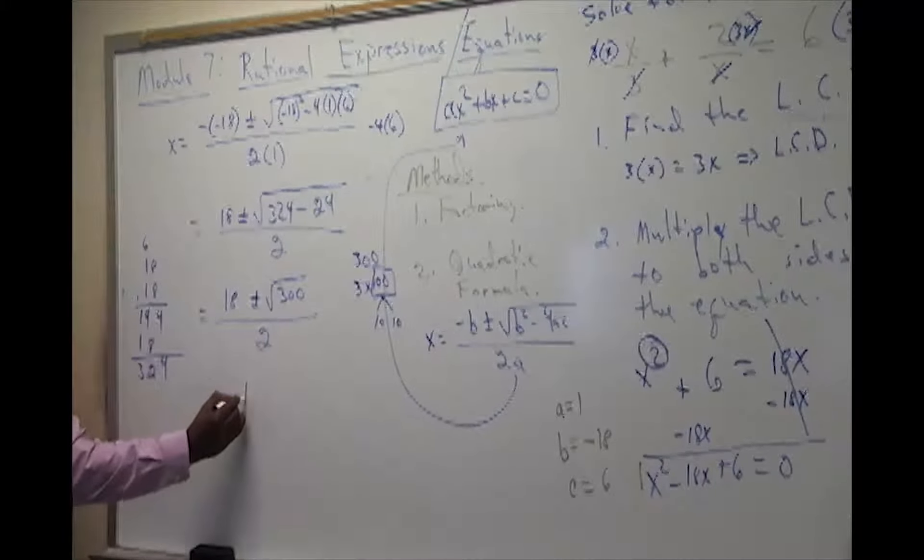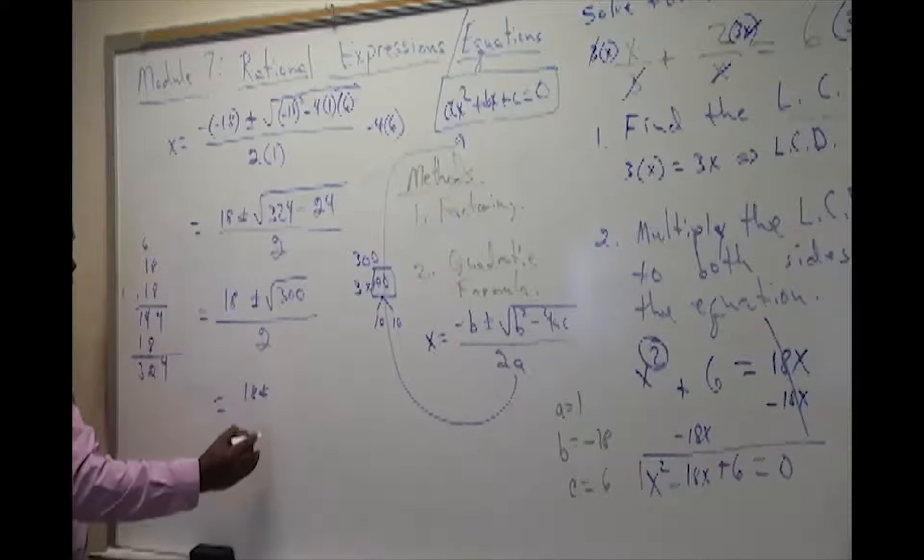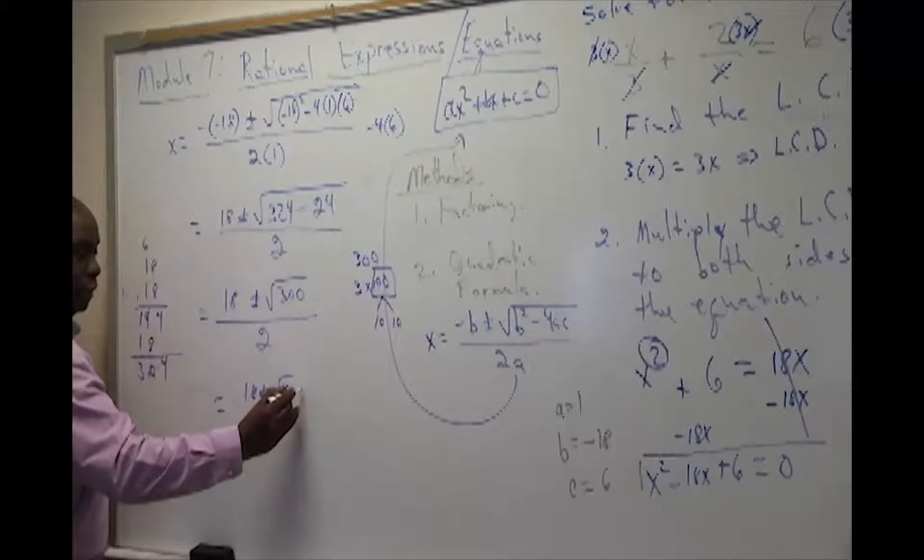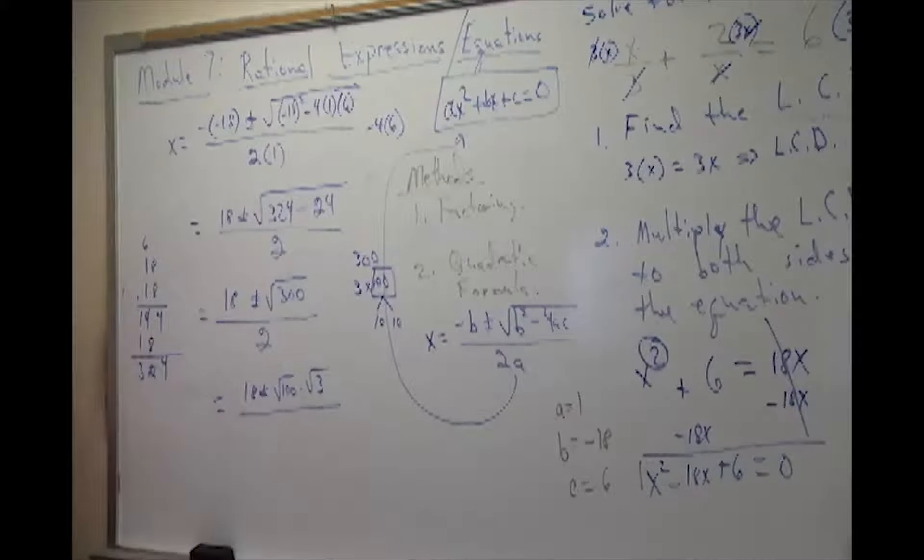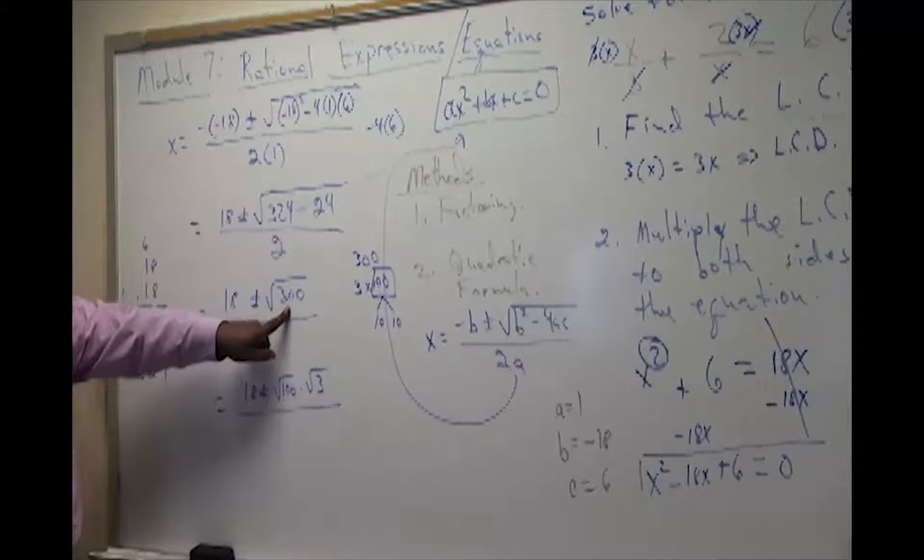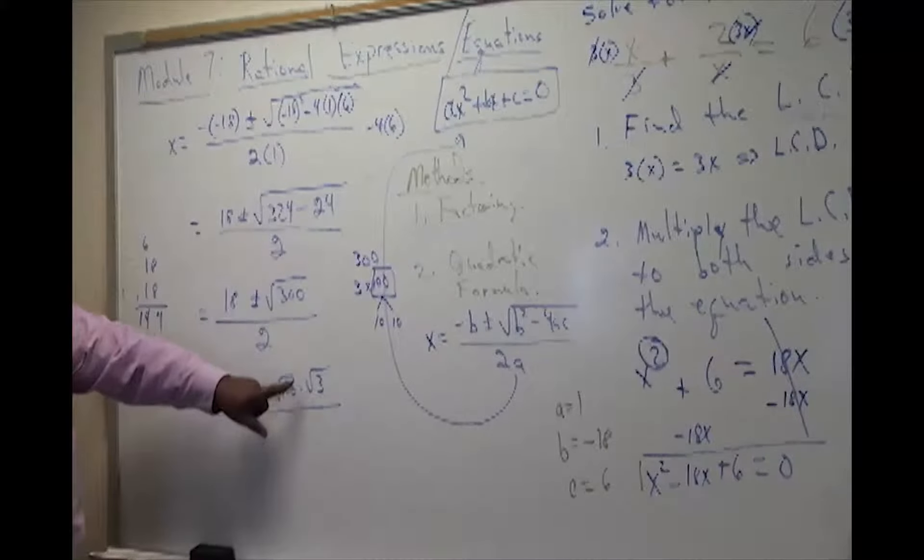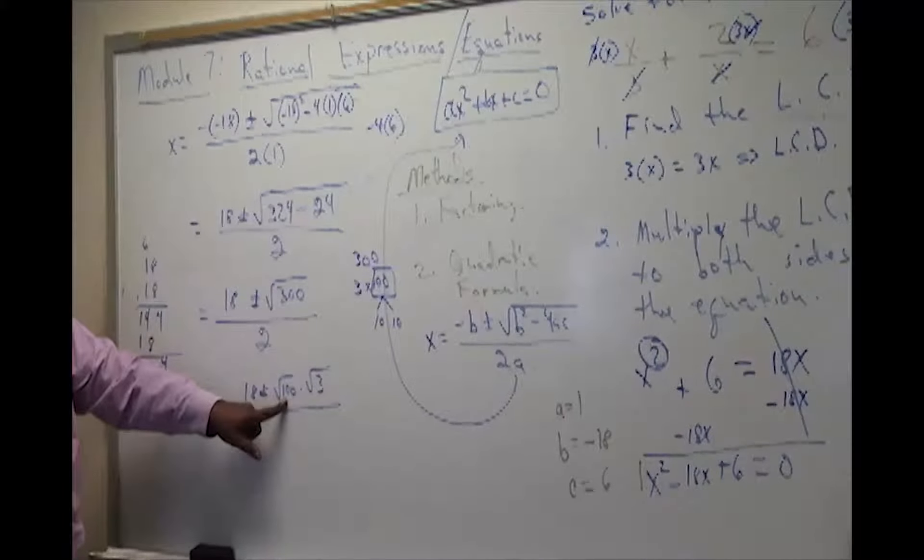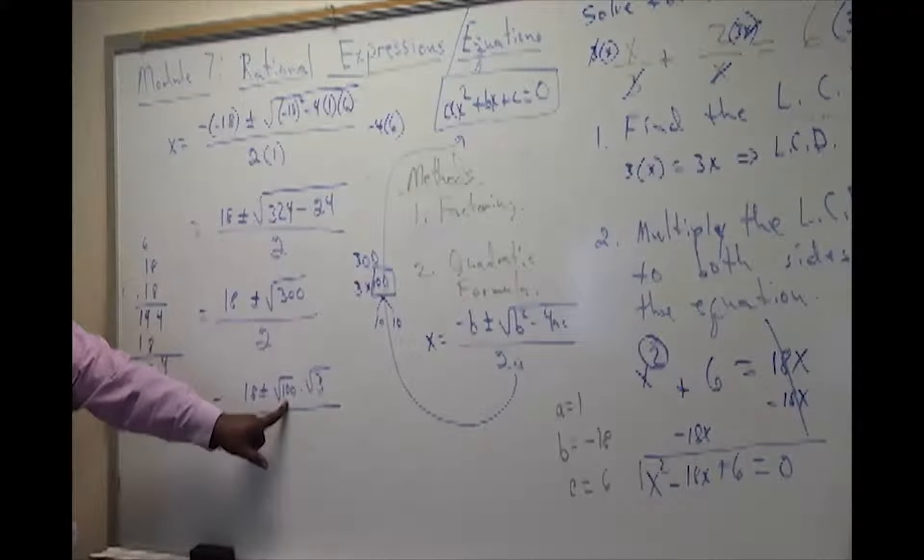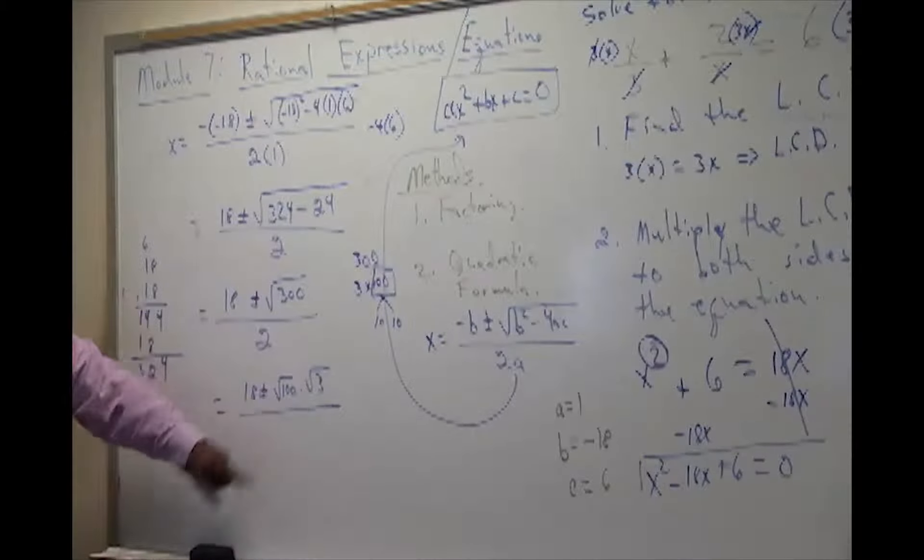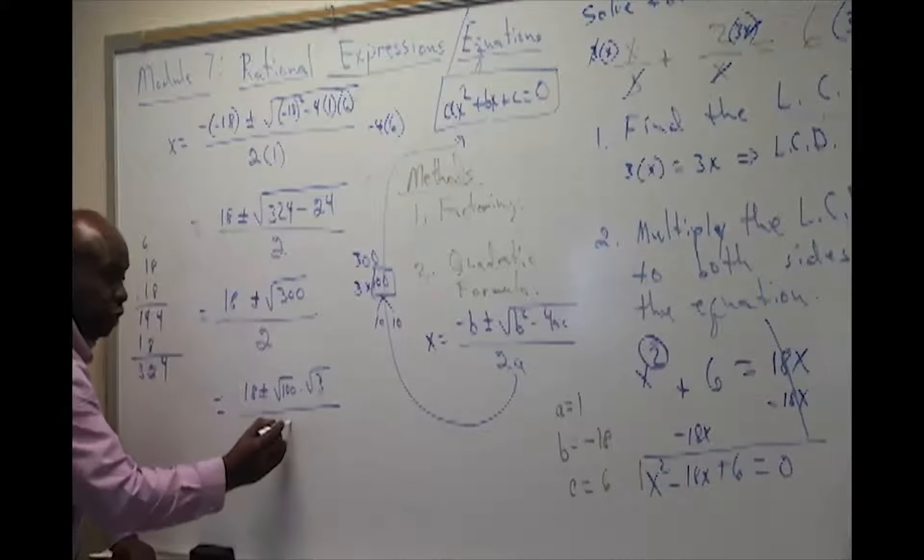So we're going to have 18 plus or minus the square root of 100 times the square root of 3. Once again, where did that come from? The 300 is separated. We separate that into 3 times 100. And why are we doing it? We're doing it because we can take the square root of 100. So that's your major goal. And that's over 2.